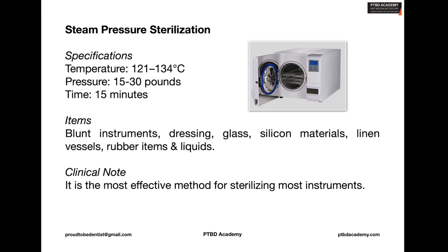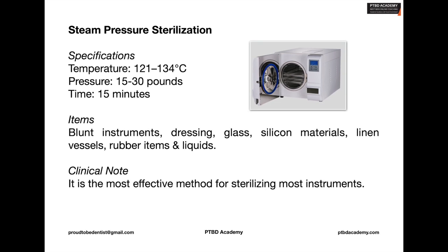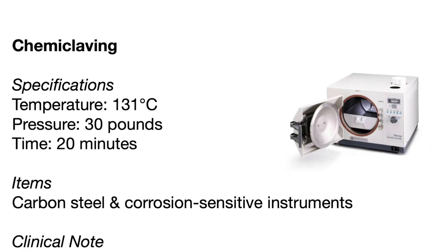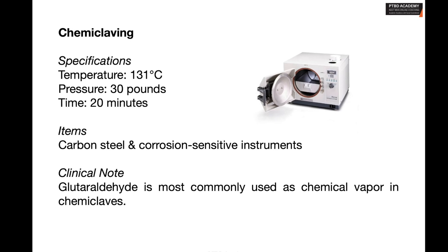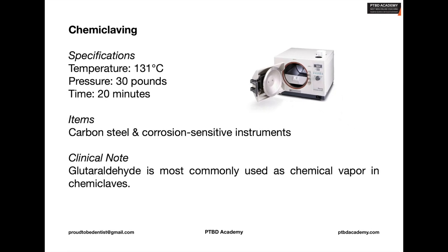Steam pressure sterilization operates at 15 to 30 pounds of pressure for a duration of 15 minutes. It's considered the most effective method for sterilizing most instruments including blunt instruments, dressings, glass material, silicone materials, rubber items, linen, vessels, and liquids. Now coming to chemiclave — chemical vapor under pressure at 131 degrees centigrade at 30 pounds is used, and carbon steel and corrosion-sensitive instruments can be sterilized without rusting, so that's the advantage of chemiclave.